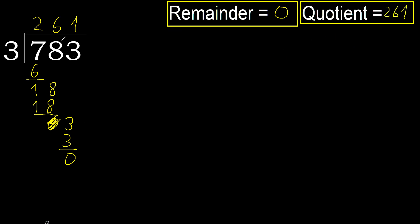Remainder 0. Therefore, 783 divided by 3 is 261.